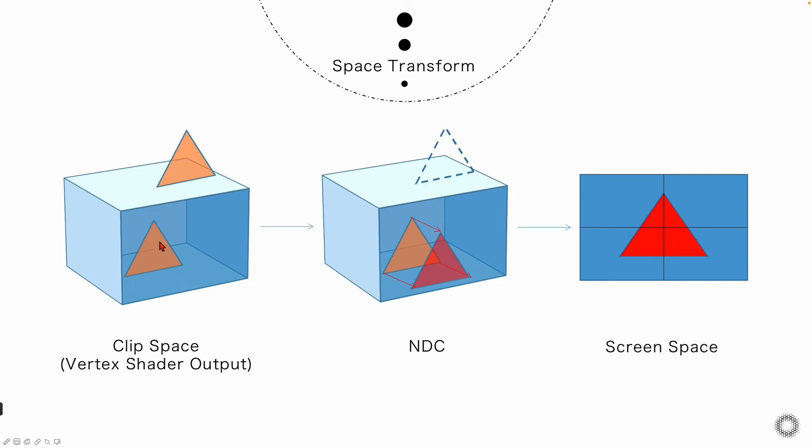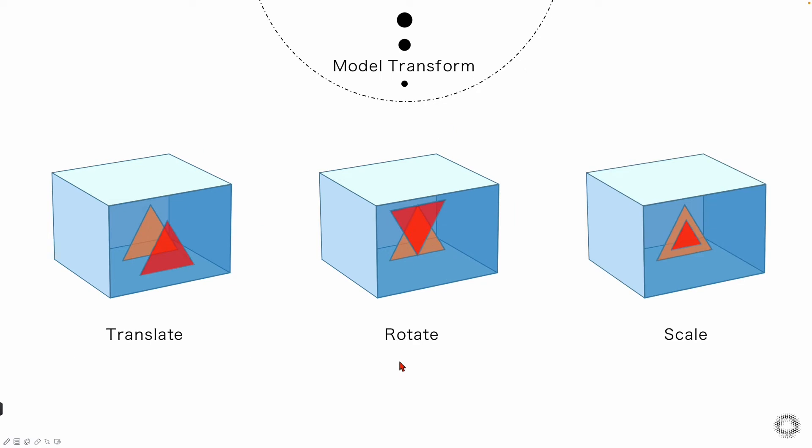In the actual scenario, apart from the graphics themselves, we need to also make various changes to these graphics to meet the actual display requirements. For example, we did a simple translation of a 2D triangle in the last video and asked people to think after class if they can handle more complex changes and how to calculate the coordinates. So let's first understand the transformation of the model space.